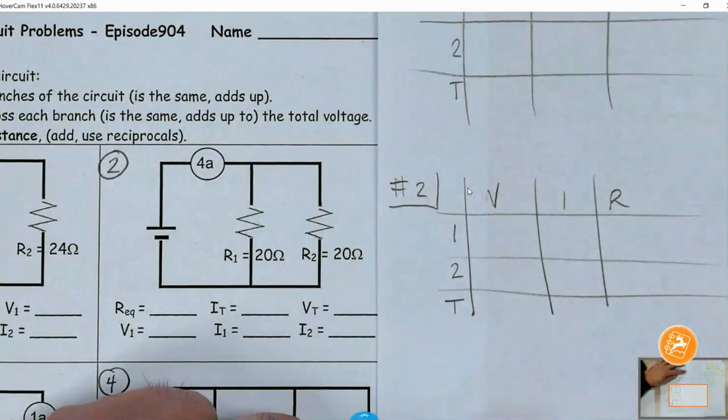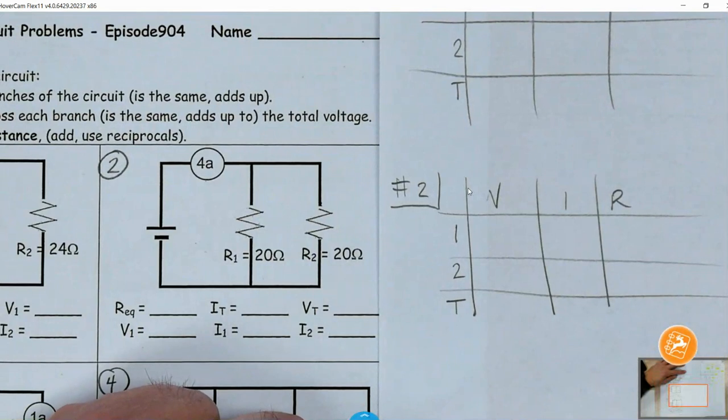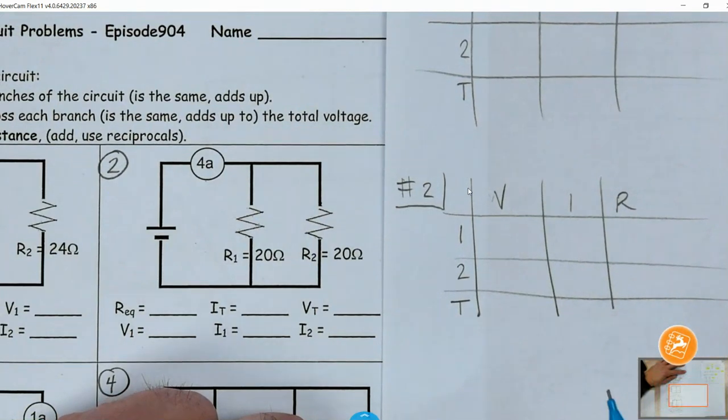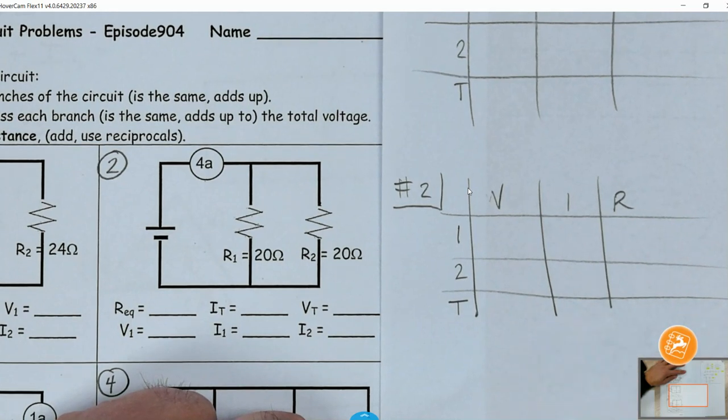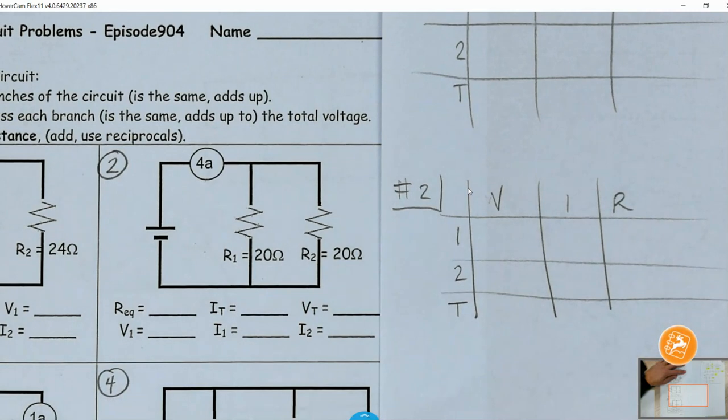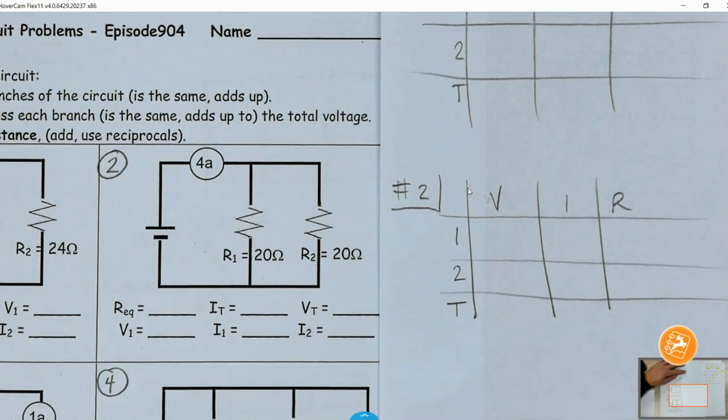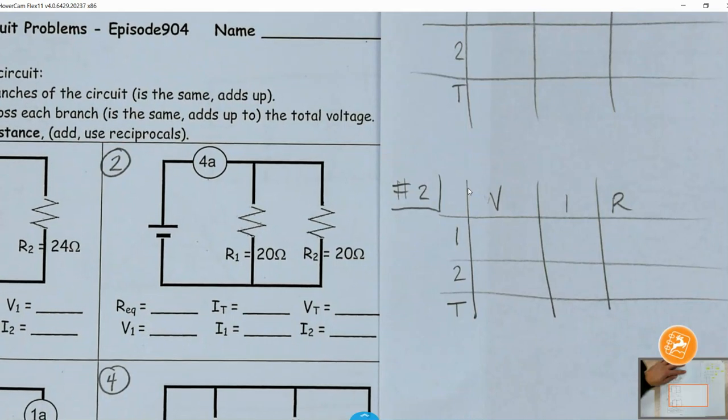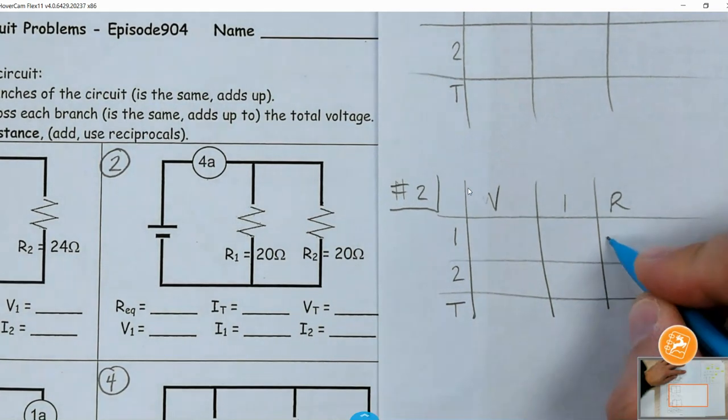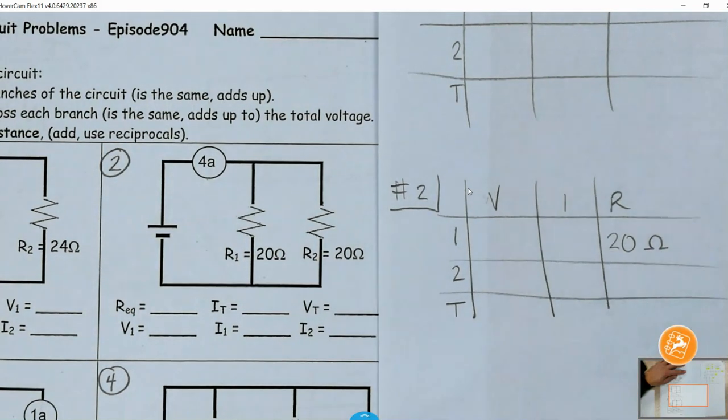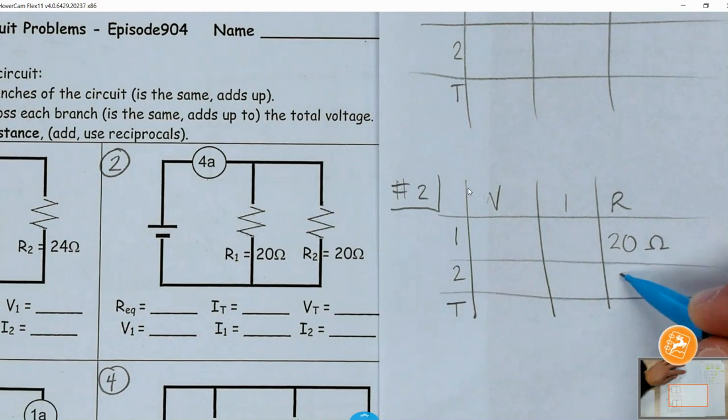So first thing that we want to do is put in all of our given information. What information are we given? We're at number two, right? So what is the number next to R1? So we got 20 and that thing is called ohms. R2 is also 20.